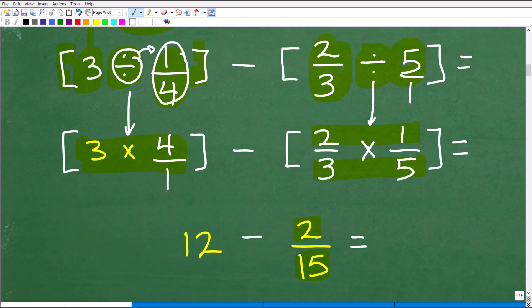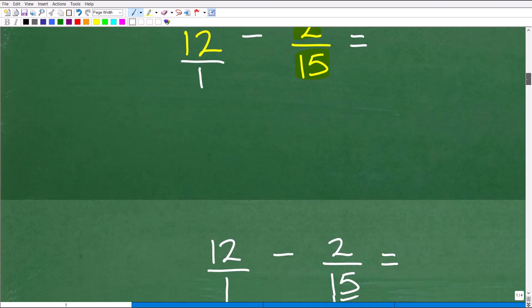Now, you might be saying, well, this isn't a fraction in and of itself. Well, anytime you want to have a number look like a fraction, you can always write it over one, when you have an integer value or whole number. So now you got to figure out what 12 over one minus two fifteenths is equal to. And let's go ahead and take a look at that part of the problem.